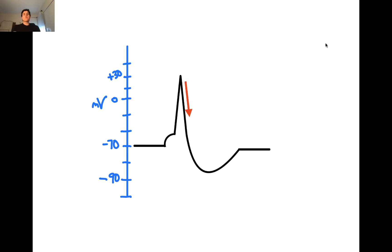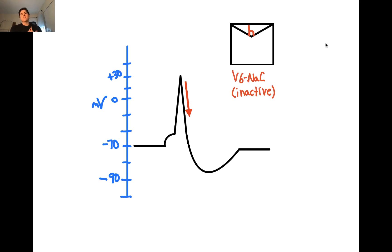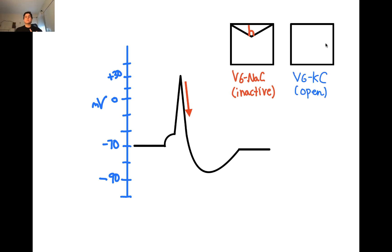During the repolarization phase, the voltage-gated sodium channels remain inactivated and the voltage-gated potassium channels are still open. What causes this repolarization — the decrease in membrane potential — is the efflux of potassium out of the cell, facilitated by these voltage-gated potassium channels.